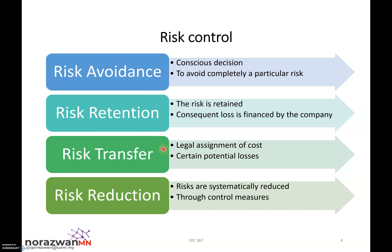The third part is risk transfer, which is more on legal assignment of cost. For risk transfer, usually the risk has already been identified and certain potential losses have been determined. So the owner or the company of the plant will make a legal assignment of cost. This is actually similar to insurance, where the plant owner takes out insurance to make a collateral for this risk, transferring their risk or the potential losses from themselves to another party.